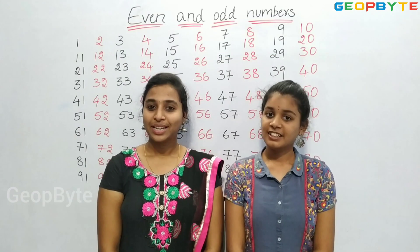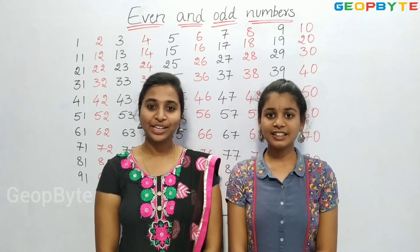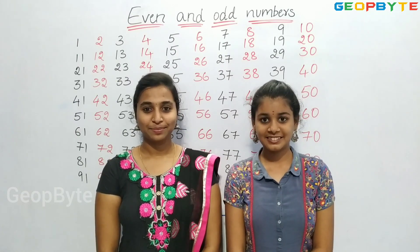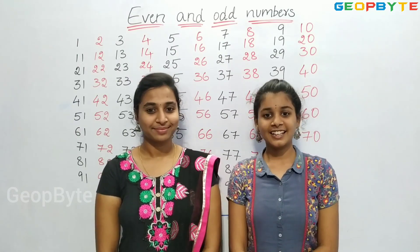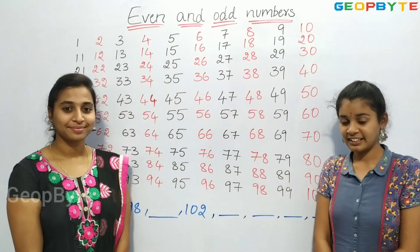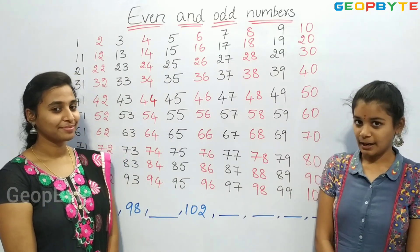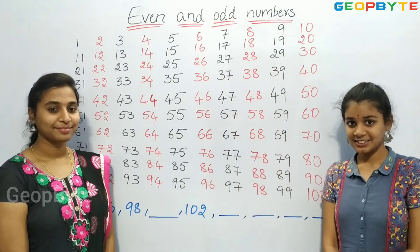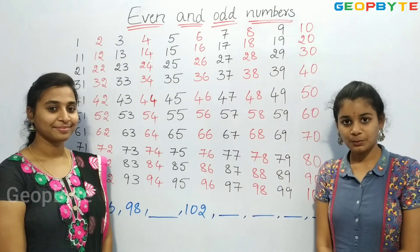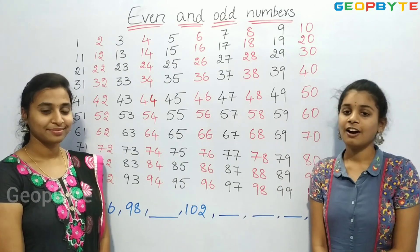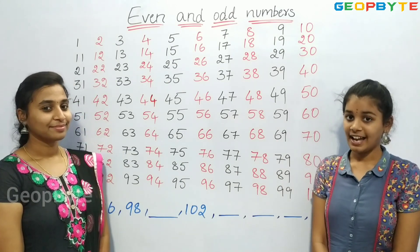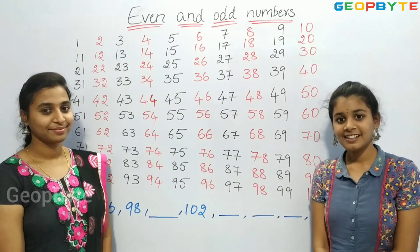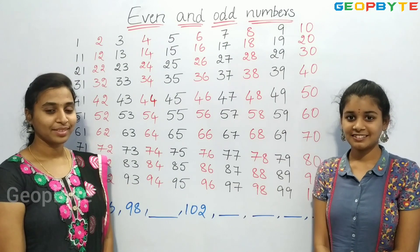Now let us get into the topic even and odd numbers. Hey kids, see here — we have numbers from 1 to 100. The numbers written with black color are odd numbers, and the numbers written with red color are even numbers.